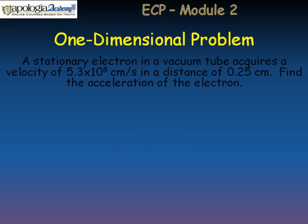We need to draw a simple picture of what we've got. We've got an electron in this vacuum tube. I'm just going to use a simple dash here as an electron. And in a distance of 0.25 centimeters, it now has a velocity of 5.3 times 10 to the 8th centimeters per second.